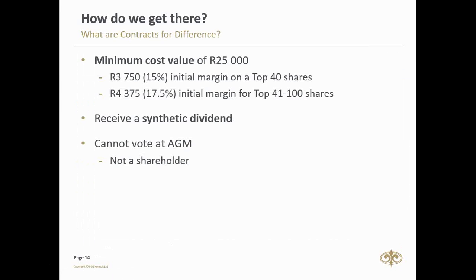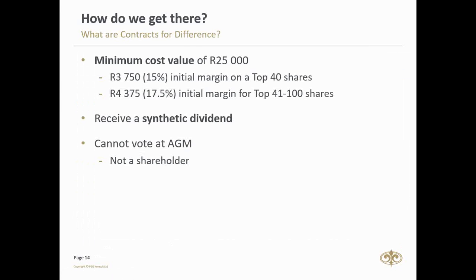For CFDs, there's a minimum transaction value of R25,000 — less than that is not economically viable. So for example, a R35,000 position in a top-40 stock at 15% margin means the minimum initial deposit is R3,750. For a mid-cap stock at 17.5%, a slightly higher margin is required. And again, with CFDs you receive a synthetic dividend and are not a registered shareholder.